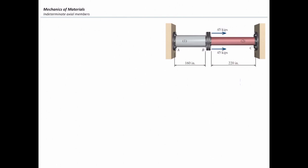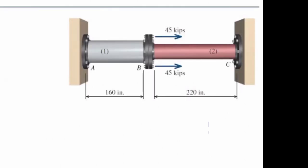Let's consider this problem. It looks very easy. Two elements are fixed at two ends and they are subjected to one force at the middle. We want to determine how much is stress in element number one. We might simply say 9 kilonewtons divided by area of element number one to get stress. But that's not correct, because that 9 kilonewtons is not all transferred by element number one — part of it is transferred by element number two.